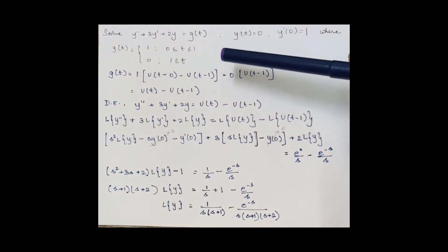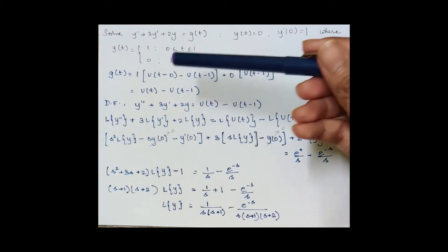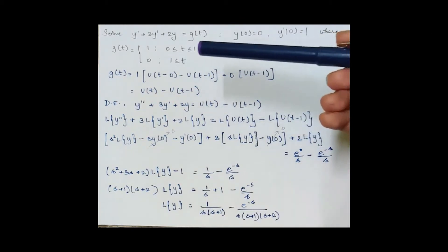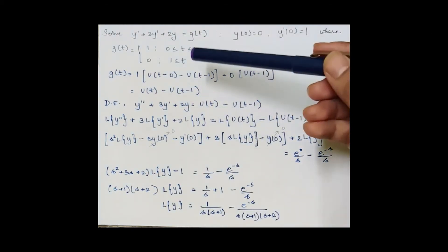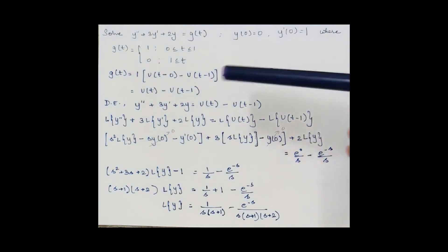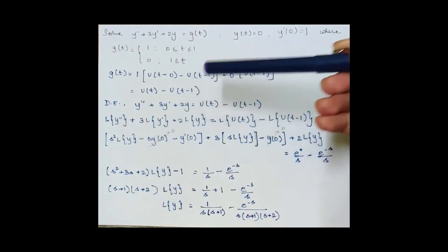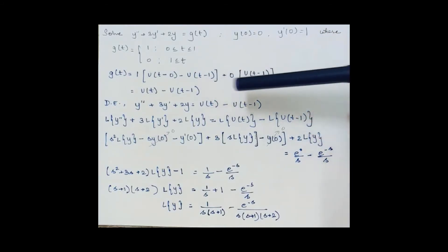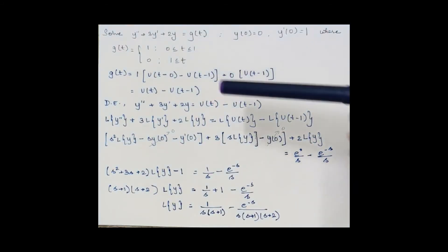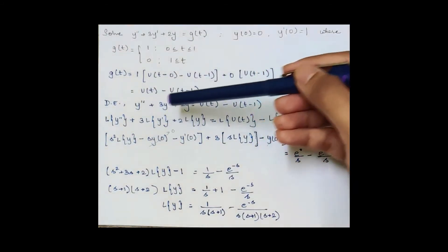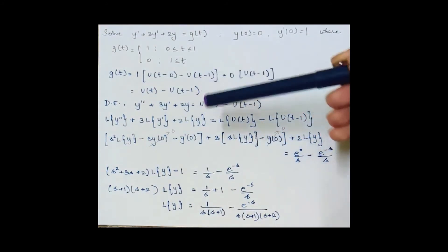The function g(t) is 1 for 0 to 1 and 0 for values greater than or equal to 1. Converting this to a single function: 1 · [u(t − 0) − u(t − 1)] + 0 · u(t − 1). The final single function simplifies to u(t) − u(t − 1).